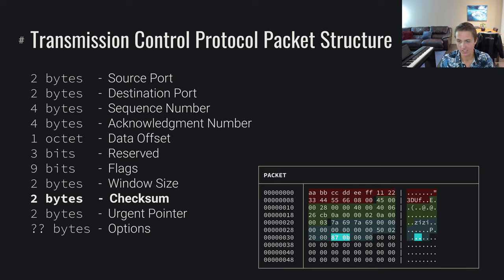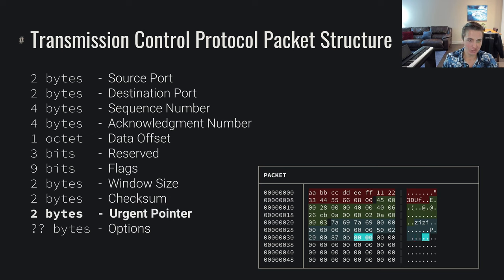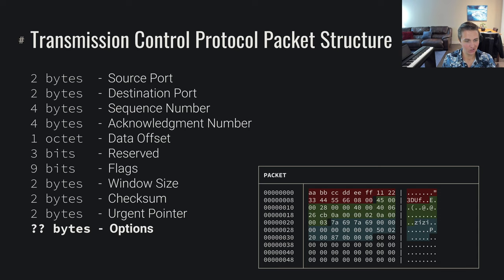Similar to IP, we've got a checksum — this takes a checksum of all the data within the header, as well as the IP layer source and destination IP address, to make sure no data was corrupted during transmission. We also have two bytes of urgent pointer: one of those flags allows us to declare that data right now is super urgent, and it uses this urgent pointer to indicate what part of the data is urgent — not very popularly used. And then we also have a bunch of capabilities for optional data, such as timestamps on transmission information, using the data offset field to determine how much optional data there is.